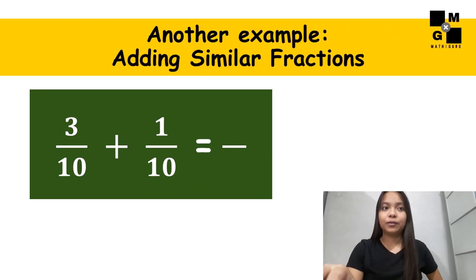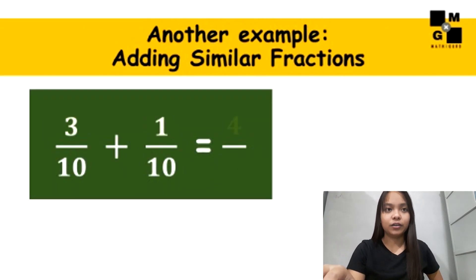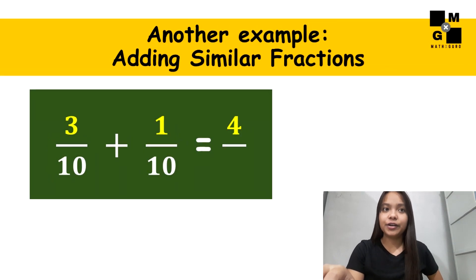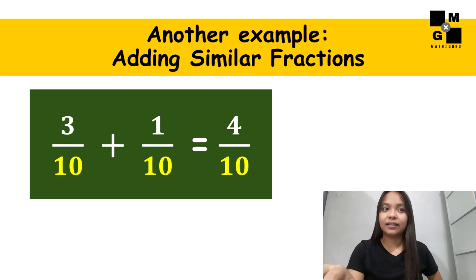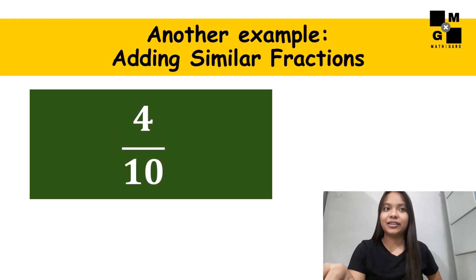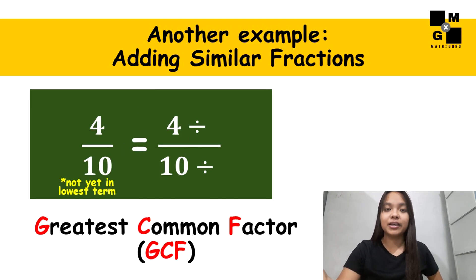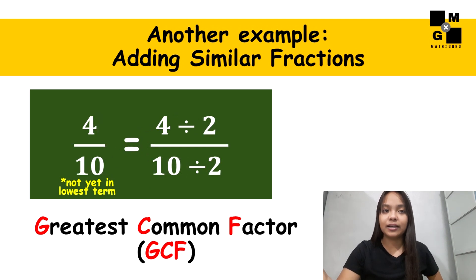Let us have another example. Three over ten plus one over ten. Add the numerators three and one, and that will become four. Then copy the denominator ten. Answer, four over ten. But we're not done yet. Four over ten is not yet in lowest term. So, we must divide four and ten by its greatest common factor. The greatest common factor of four and ten is two.